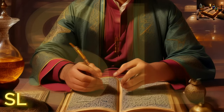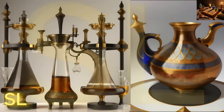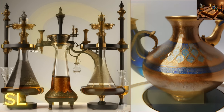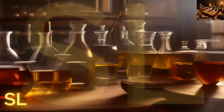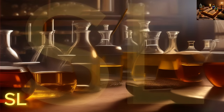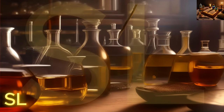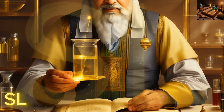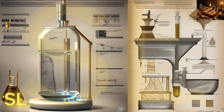Jabir Ibn Hayyan was also a pioneer in the field of analytical chemistry. He developed various methods of material analysis, including methods of weighing, composition analysis, and electrical analysis.